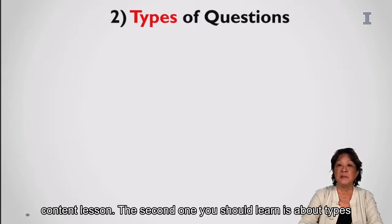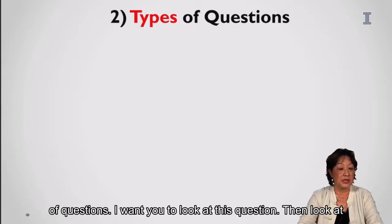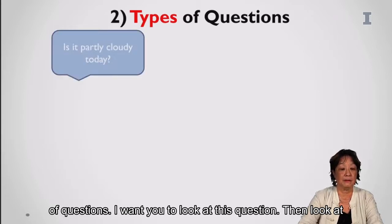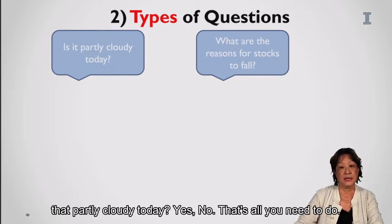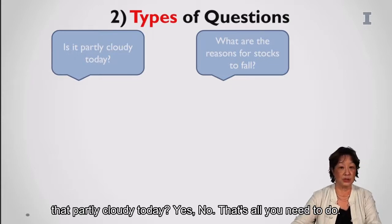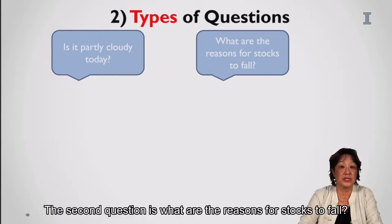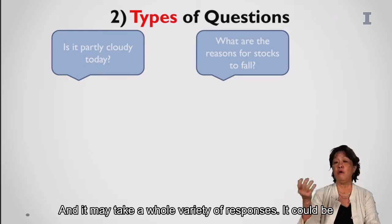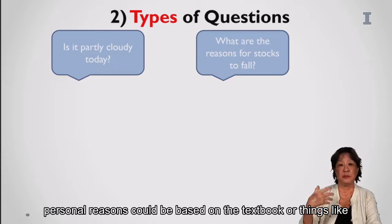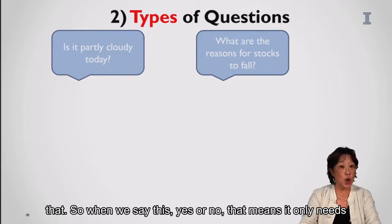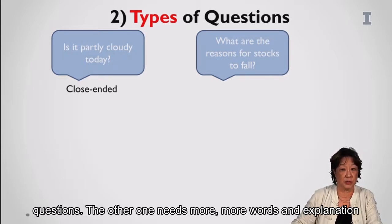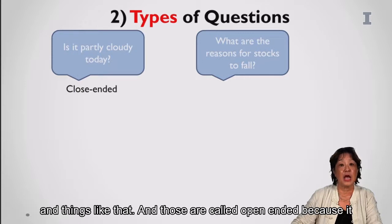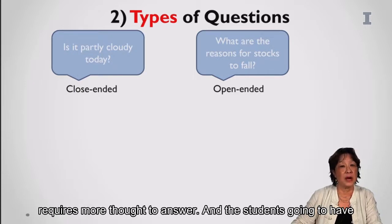The second strategy is about types of questions. Look at this question, then look at this question — do you see the difference? 'Is it partly cloudy today?' is a yes/no question that only needs one or two words — those are called closed-ended questions. 'What are the reasons for stocks to fall?' can take a whole variety of responses. Those are called open-ended questions because they require more thought and draw from several different areas.